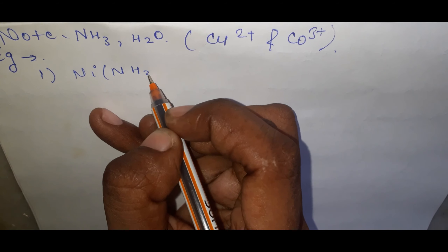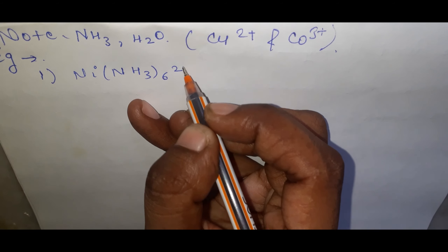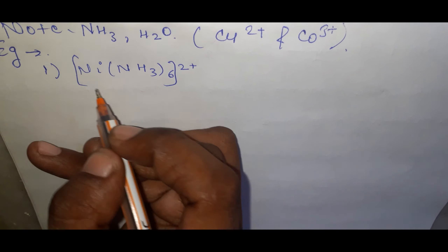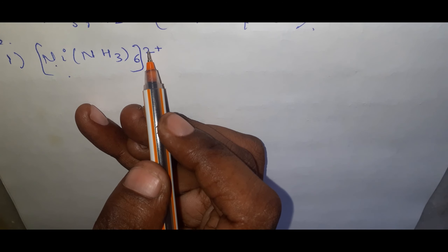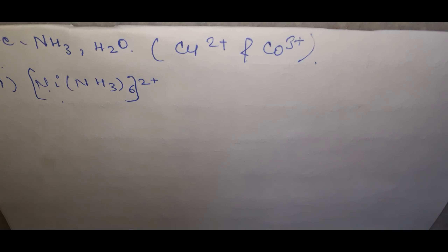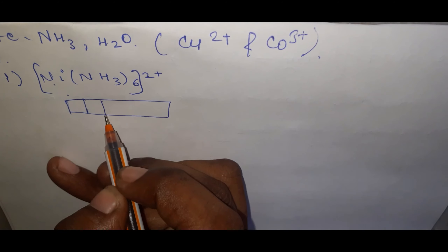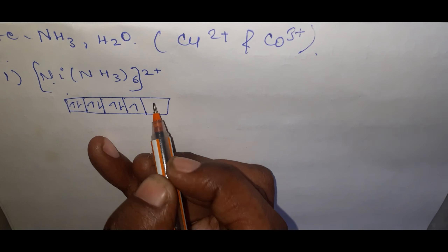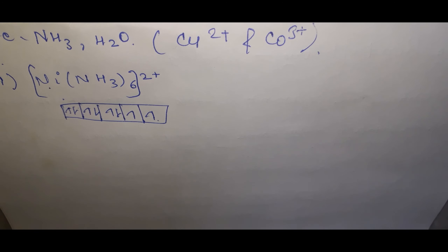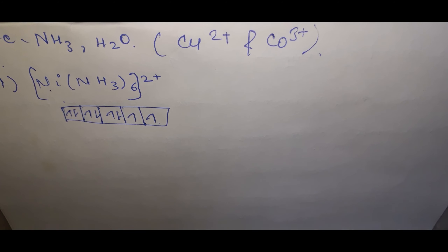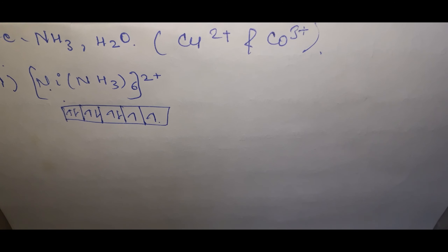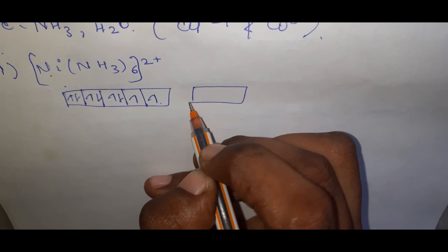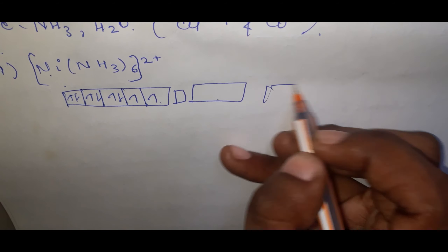Example: [Ni(NH₃)₆]²⁺. Ni has a 2+ charge, so its configuration is 3d⁸. NH₃ here acts as a weak ligand (not in the presence of Cu²⁺ or Co³⁺), so it cannot cause pairing. The orbitals used are 4s, 4p, and 4d.